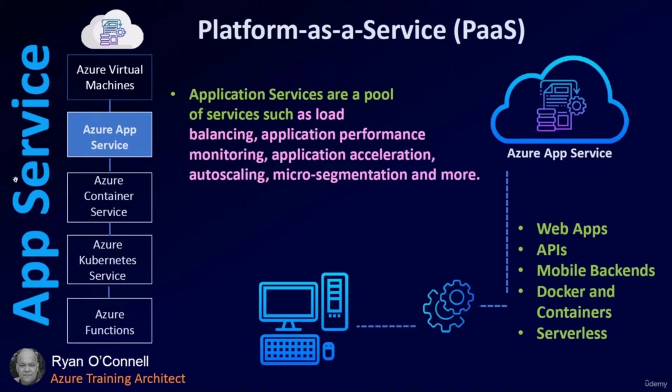Platform as a Service. Application services are a pool of services such as load balancing, application performance monitoring, application acceleration, auto-scaling, micro-segmentation, and more. App services are great for web apps, APIs, mobile backend, Docker and containers, and serverless infrastructure.